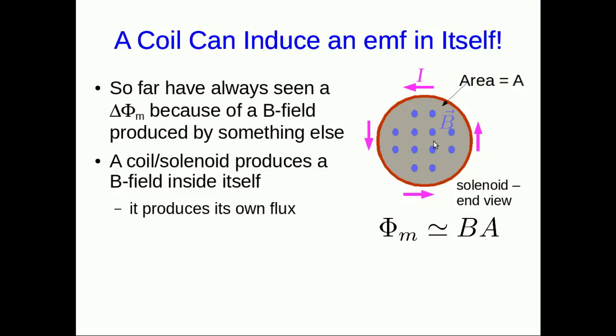If it's a solenoid, then the B field is uniform inside it and so the magnetic flux is just that uniform B field times the area of the solenoid. And that's only strictly true if it's an infinitely long solenoid but it's pretty close for any real solenoid. Well that B field depends on the amount of current through the coil.